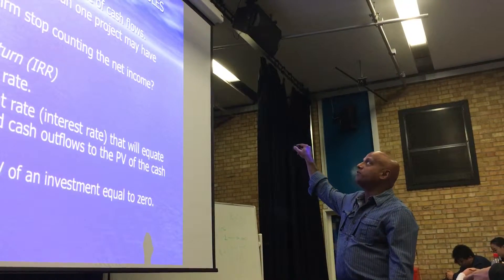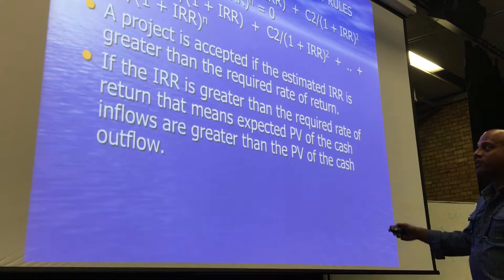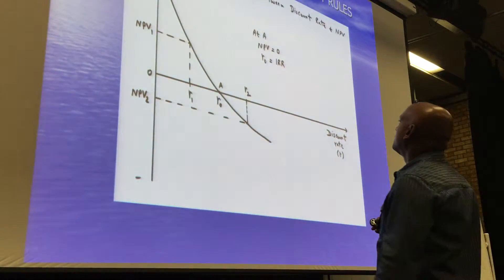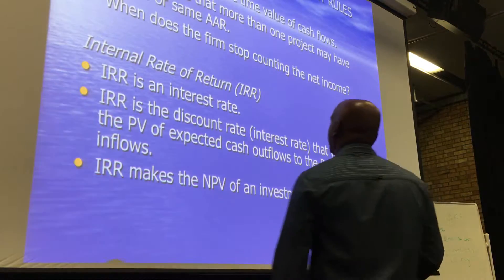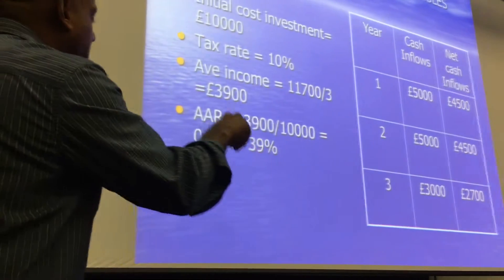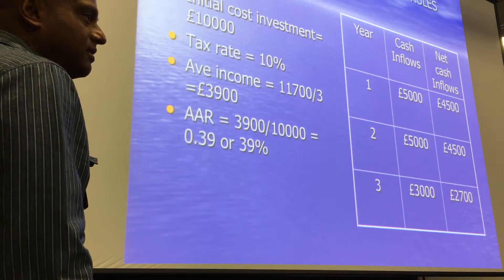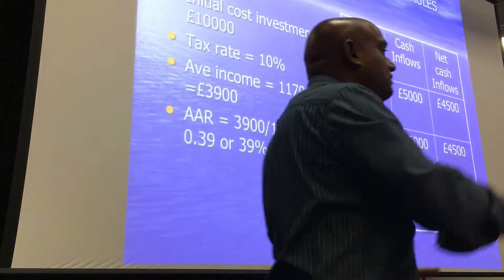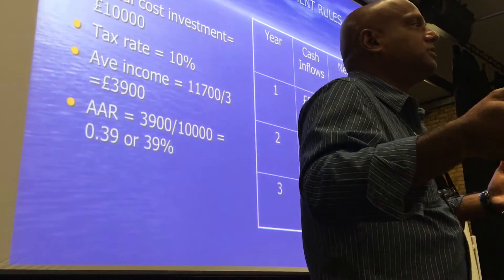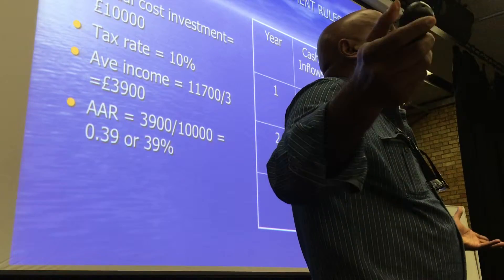It's very possible that more than one project may have the same or similar ARR. You may have three projects — A, B, and C — all with the same 39%, but with different cash flows. After tax and all that, you may end up with three or four projects with the same or very similar ARR. Then which one do you pick?